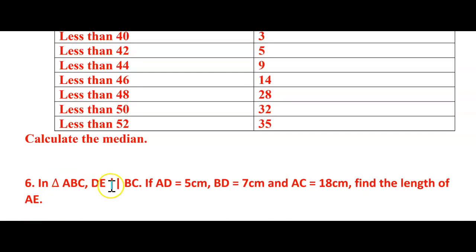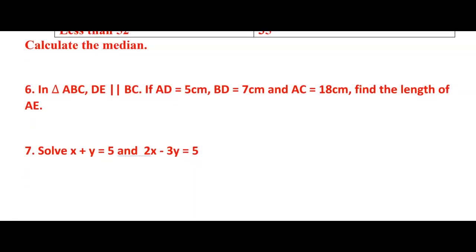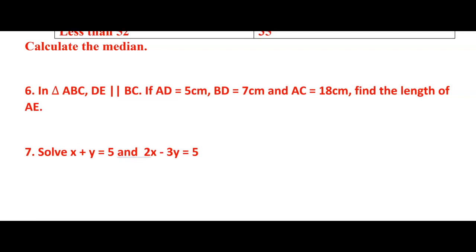You can see here, children. Question number 6. In triangle ABC, DE is parallel to BC and they have given three sides, the dimensions of the three sides, and they are asking you to find the another side that is AE. You can draw the figure and you have to put these values into that and find the solution. And next, solve X plus Y equals 5 and 2X minus 3Y equals 5. You need to solve these two equations, but they have not mentioned by which method. You can use like elimination method and do it.